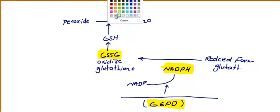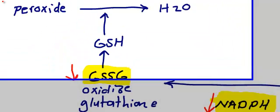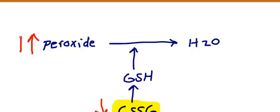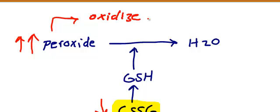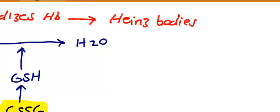Now imagine you have a problem with Glucose-6-Phosphate Dehydrogenase. That means decreased G6PD leads to decreased NADPH, and you will have decreased oxidized glutathione, which is the third player. As a result, peroxide will build up more and more. Since peroxide is dangerous to the body, it will damage and oxidize hemoglobin. Oxidized hemoglobin is called a Heinz body.